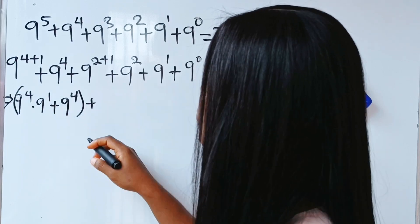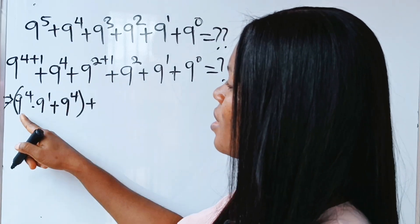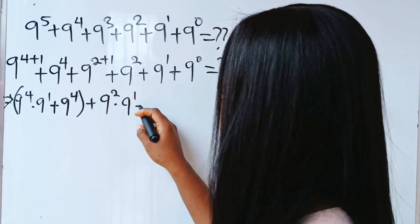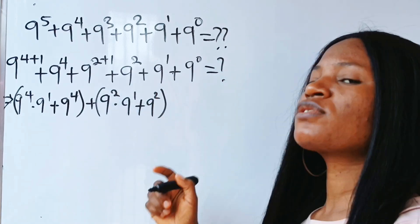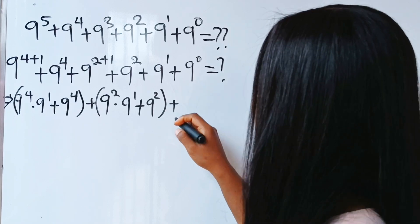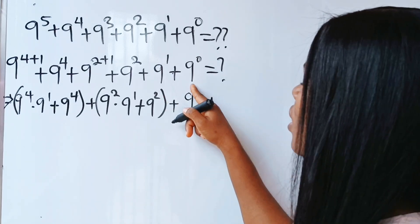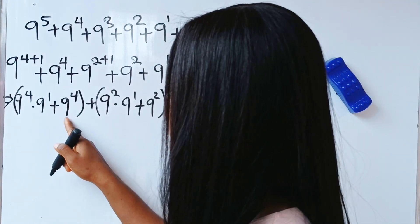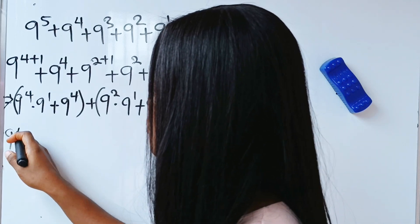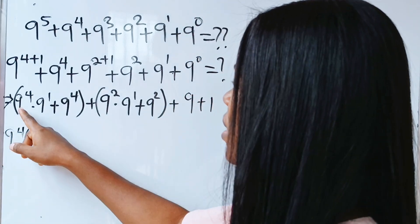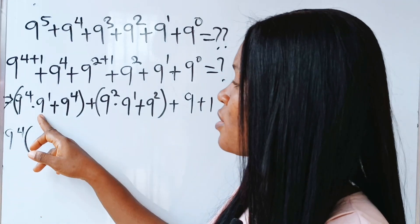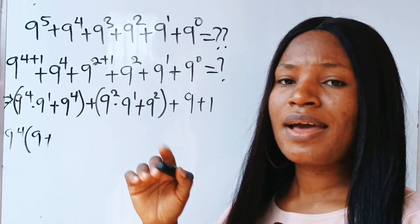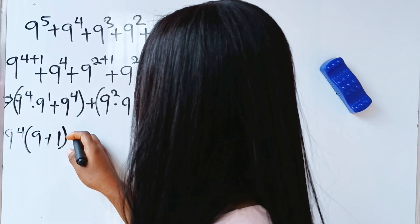Plus 9 to the power of 4. Now we are going to expand the same way: 9 to the power of 2 multiplied by 9 to the power of 1, plus 9 to the power of 2. Let me group them — we have 9 to the power of 2 and 9 to the power of 2. Plus this, which is the same as 9 plus 1. Recall that any number to the power of 0 is equal to 1. So we factorize 9 to the power of 4 out: 9 to the power of 4 in brackets — 9 to the power of 4 divided by 9 to the power of 4 gives us 1.